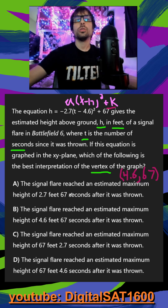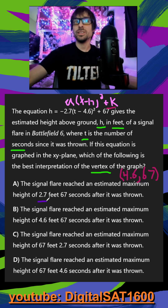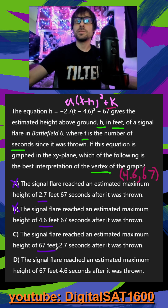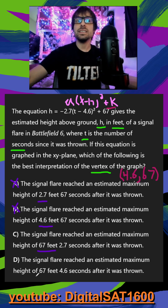Looking through my answers: the signal flare reached a height of 2.7 — that's not going to work. The signal flare reached a height of 4.6 — not going to work. We see 67 feet, but it's 2.7 seconds after. And then in D, 67 feet, 4.6 seconds after it was thrown.